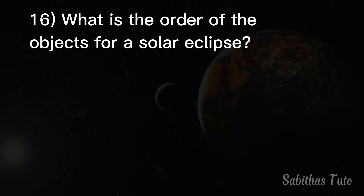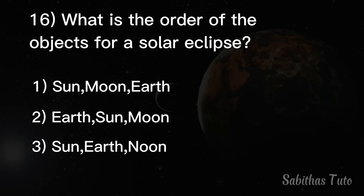Sixteenth question. What is the order of the objects for a solar eclipse? The answer is sun, moon, earth.